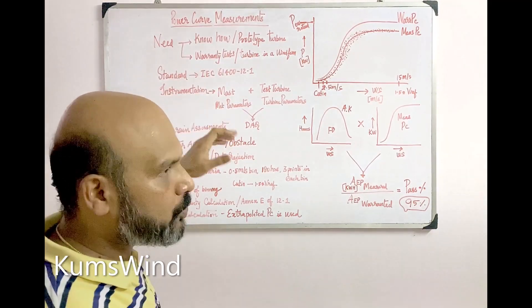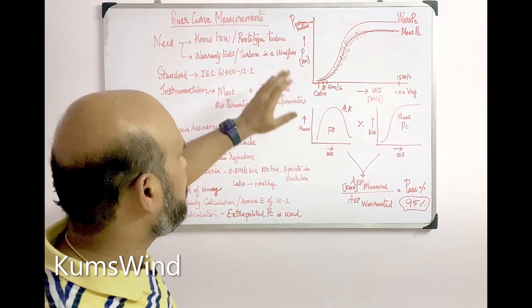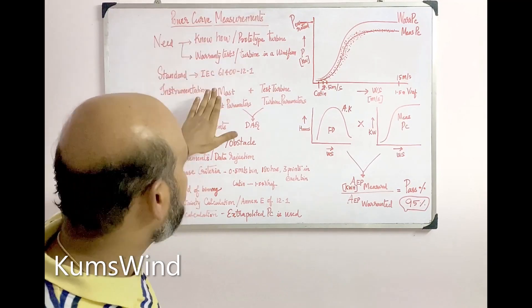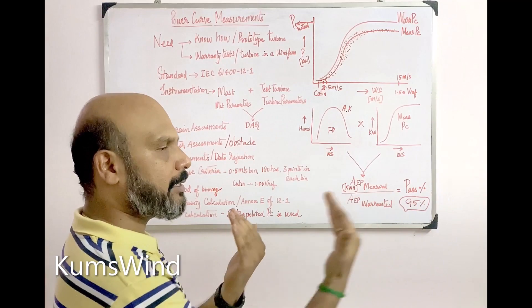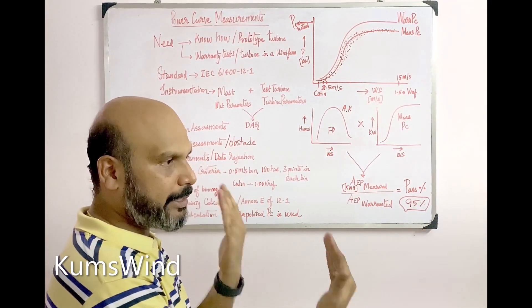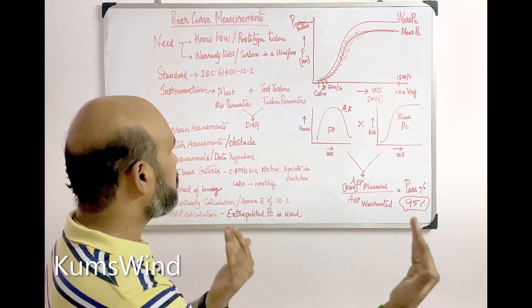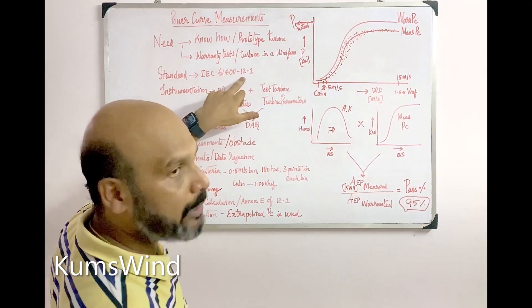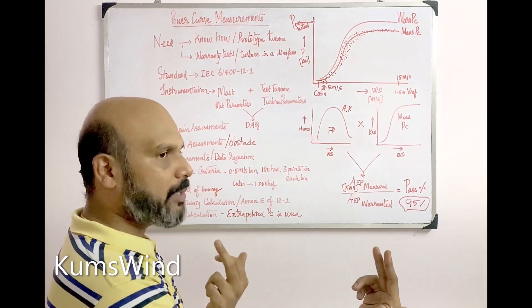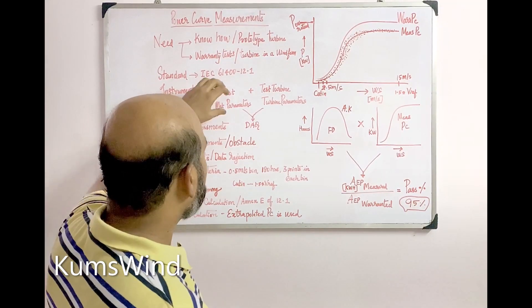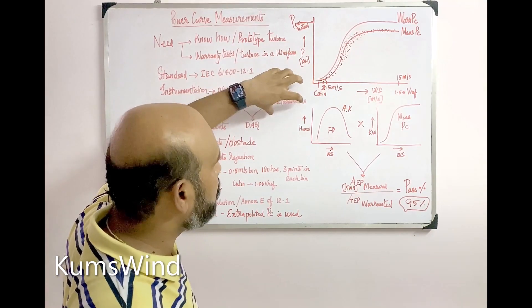The instrumentation setup needed for power curve measurement includes a meteorological mast placed exactly in front of the test turbine at a distance of 2 to 4 times the rotor diameter. This distance is governed by the IEC 12-1 standard, which states the ideal distance between the test turbine and the mast is between 2D to 4D. A meteorological mast is erected in front of the test turbine.